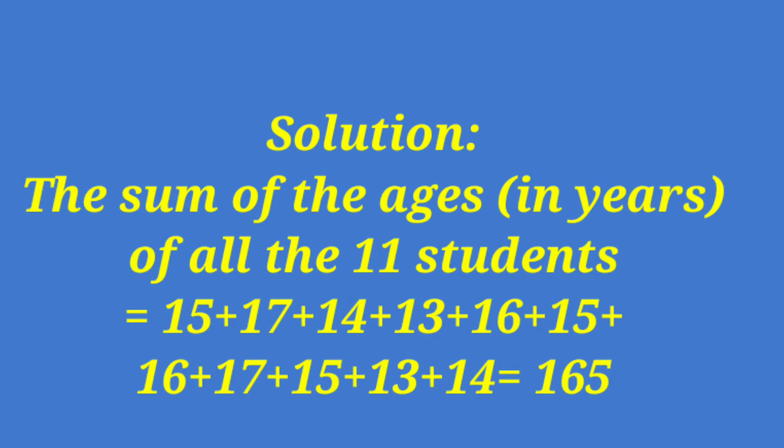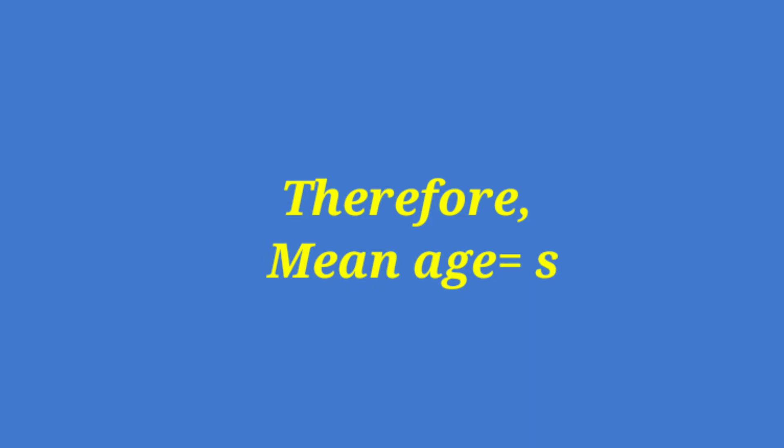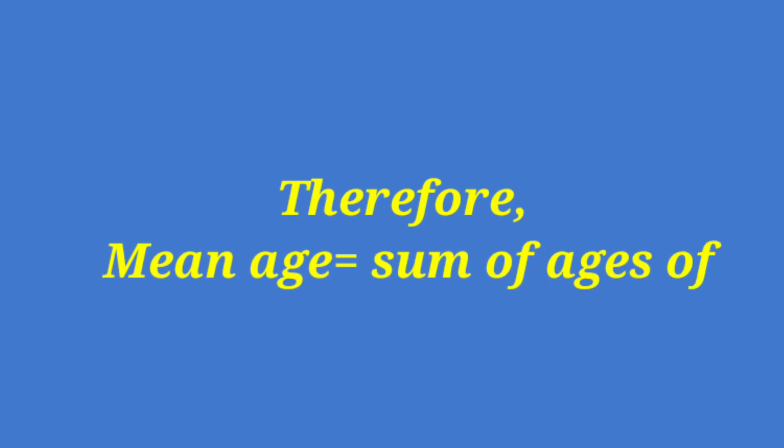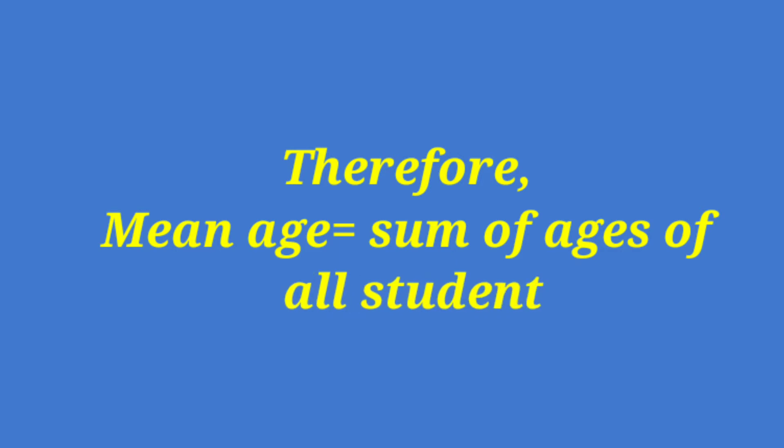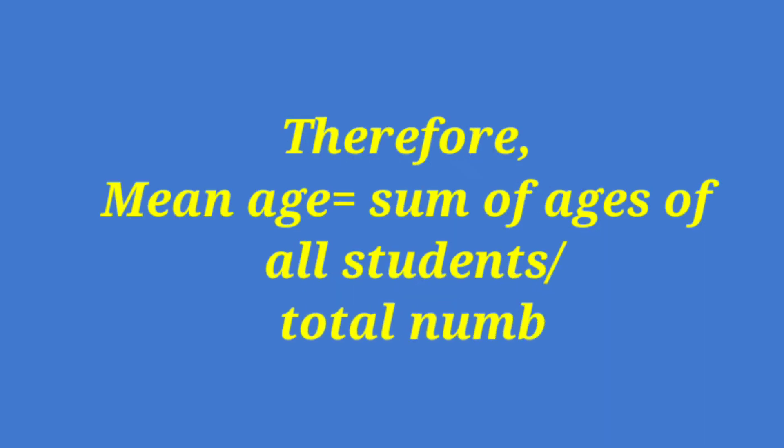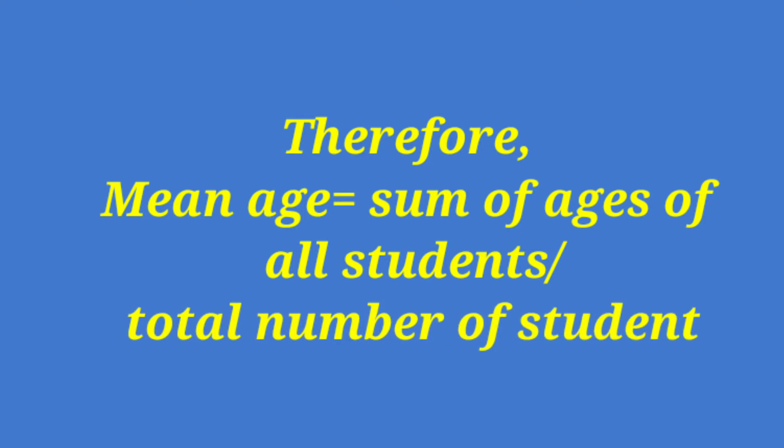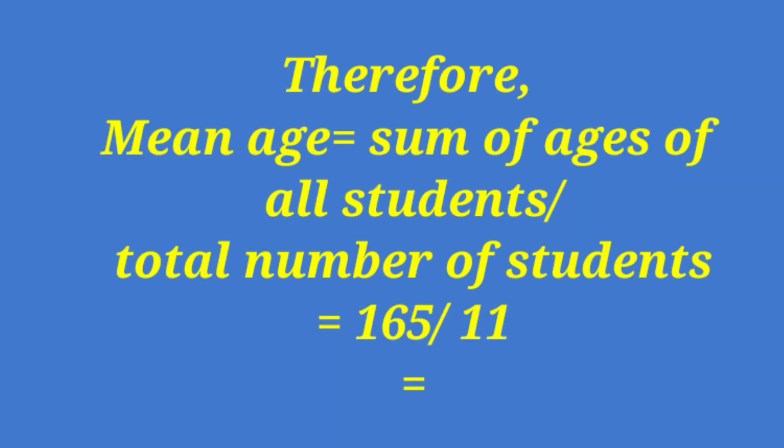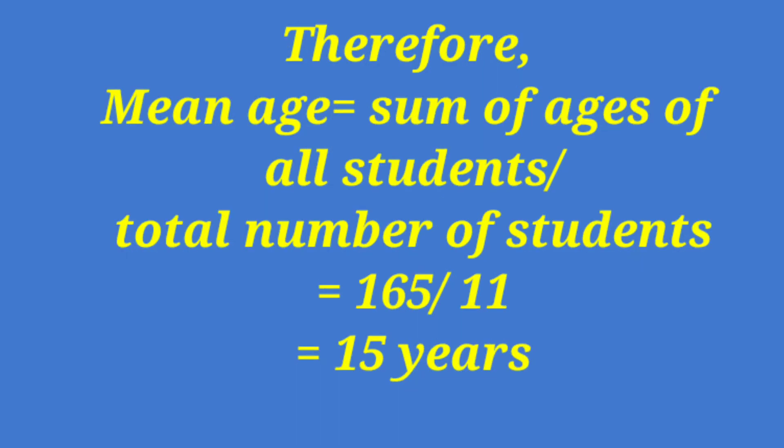Therefore, mean age equals sum of ages of all students divided by total number of students. So the sum is 165, and there are 11 students. When you divide, you get 15 years.